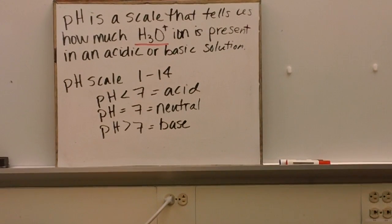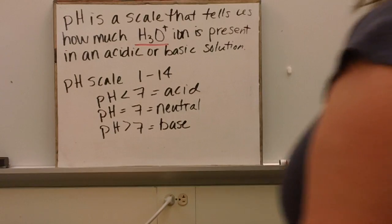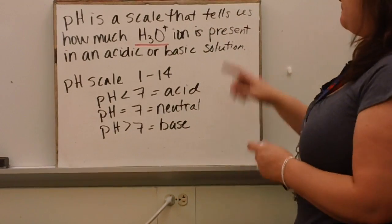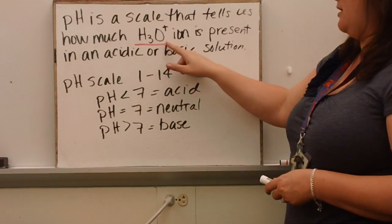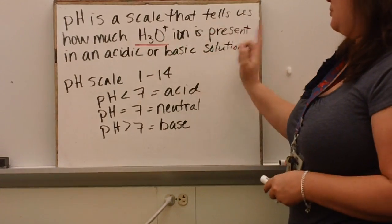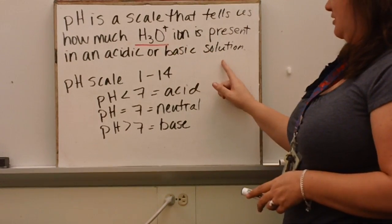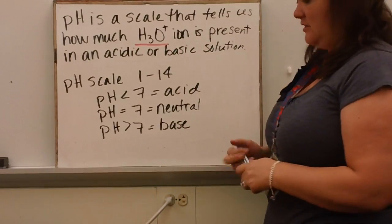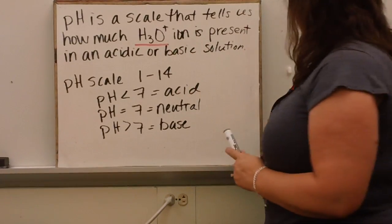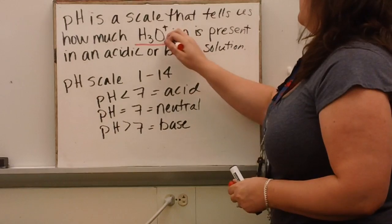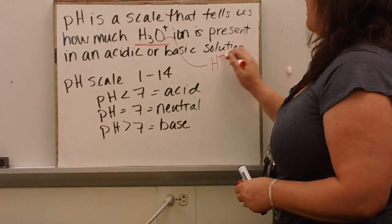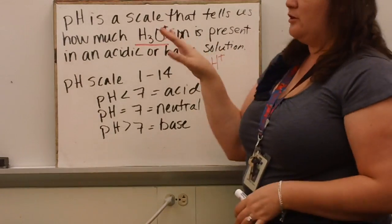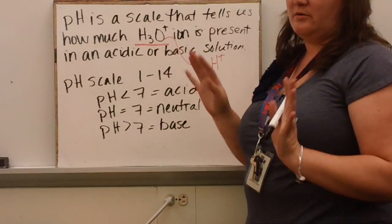Today we're going to talk about pH. pH is a scale that tells us how much hydronium ion is present in an acidic or basic solution. The hydronium ion is also known as the hydrogen ion, so you will see me use those two terms interchangeably. H⁺ and H₃O⁺ are the same thing.